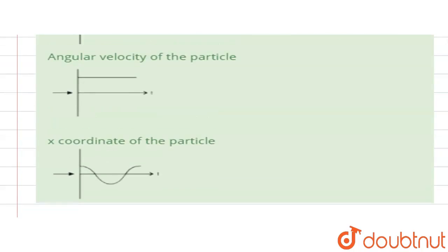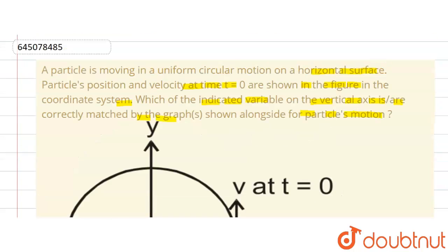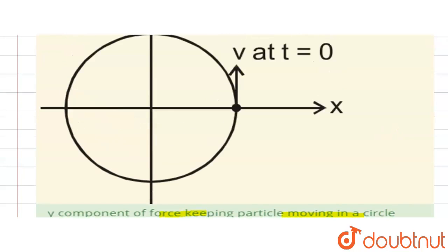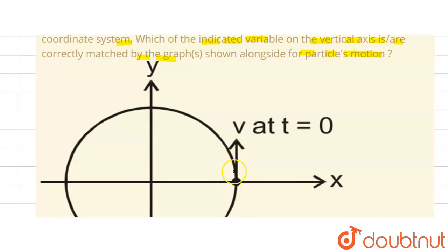So here firstly we see this first graph. So here this is the y component of force keeping particle moving in a circle. So here in that case, at this point the velocity is maximum when it moves up.